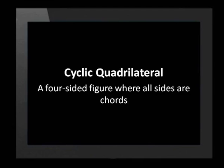A cyclic quadrilateral is a quadrilateral whose vertices or corners lie on the circumference of a circle. Another way of putting this is: a cyclic quadrilateral is a four-sided figure where all sides are chords.